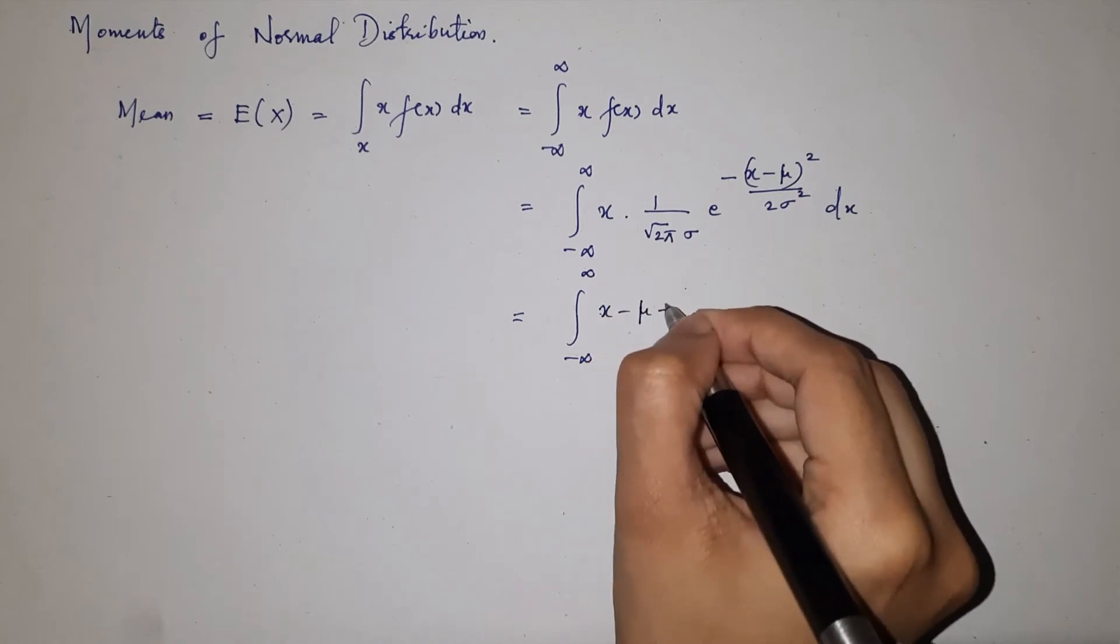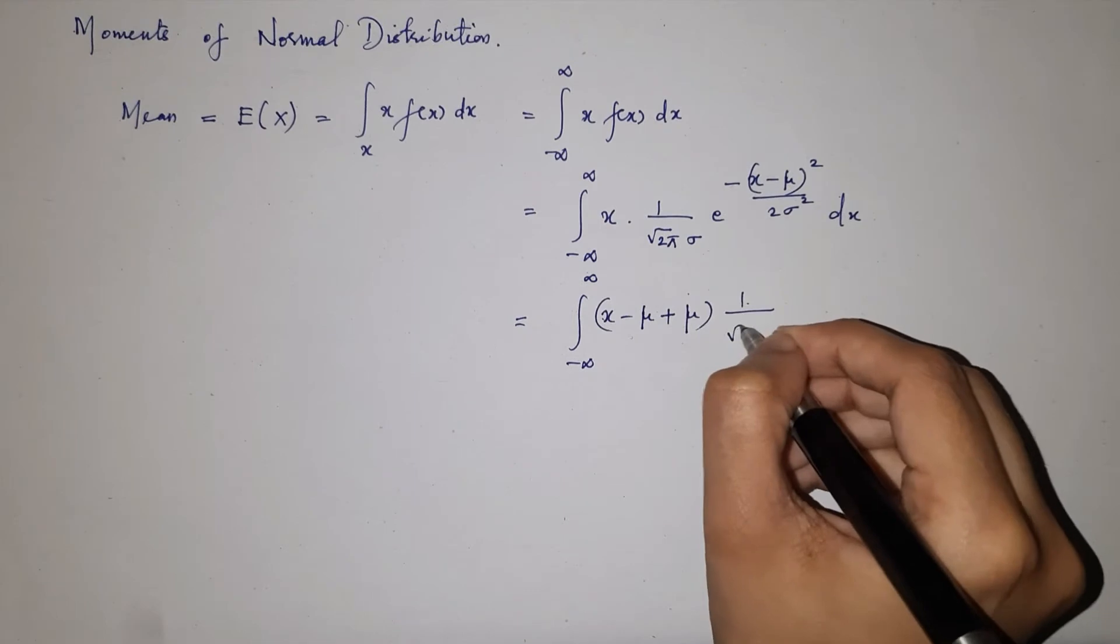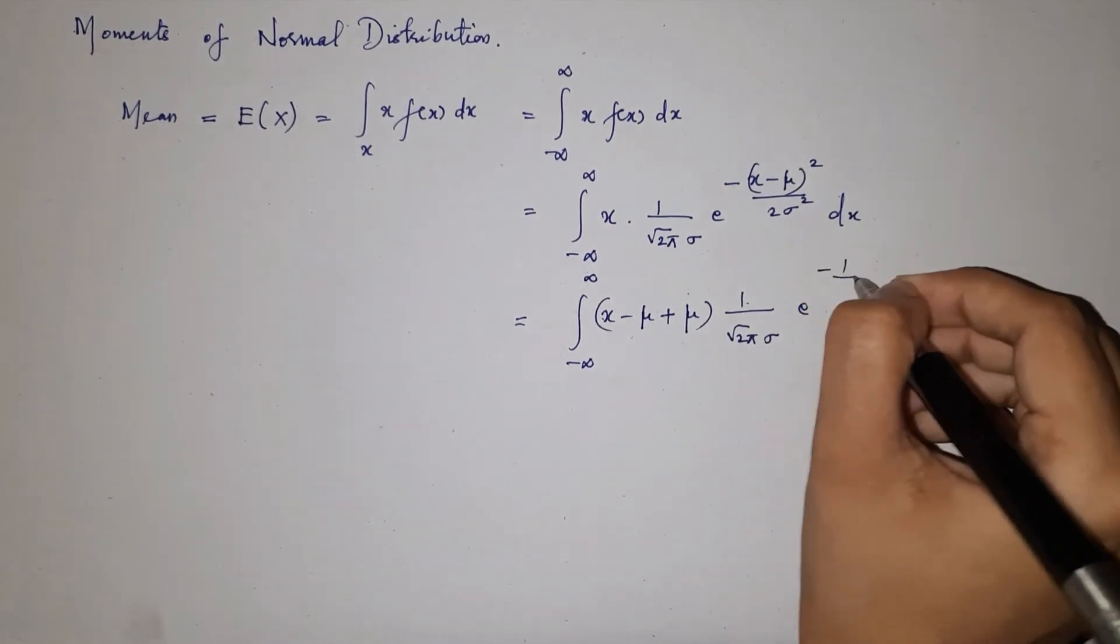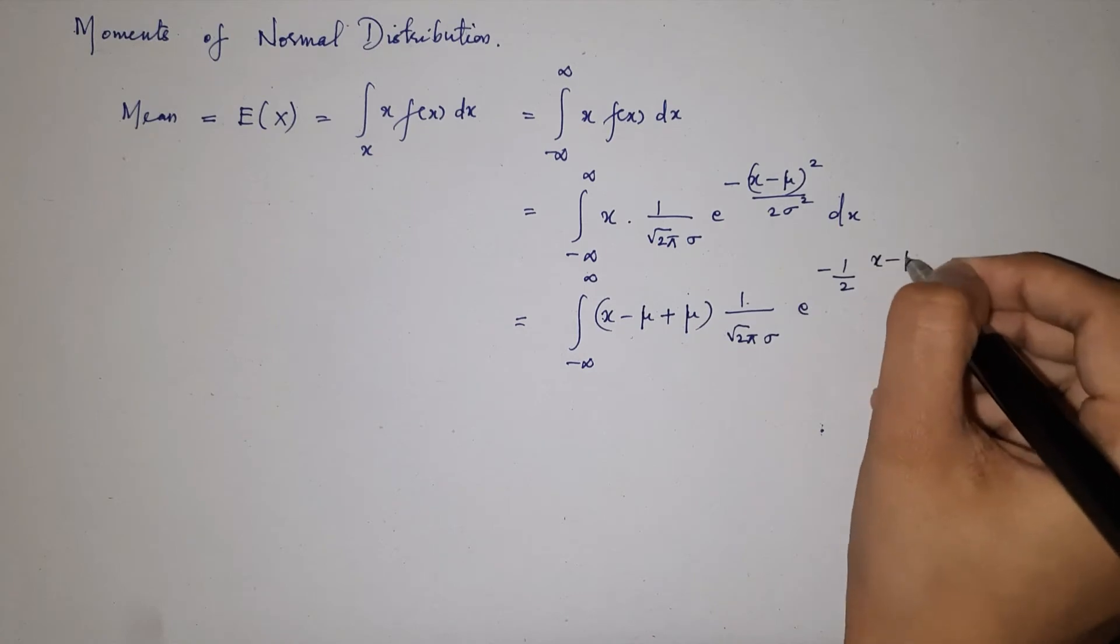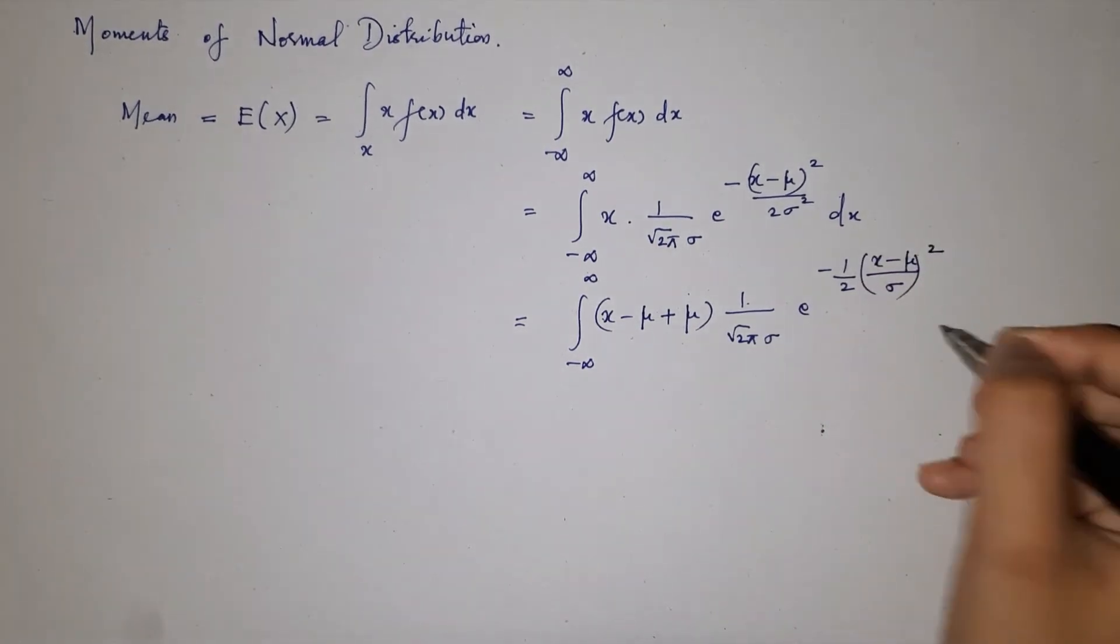x minus mu plus mu into 1 by root 2 pi sigma e raised to minus 1 by 2 x minus mu by sigma the whole square dx.